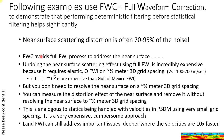FWC is somewhat similar to the FWI process, but it avoids the full FWI process to address the near surface noise. Undoing the near surface scattering effect using full FWI is incredibly expensive because it requires elastic Q-FWI on a half meter grid, 3D grids with incredibly slow velocities. It turns out this is 10 to the 6th more expensive than Gulf of Mexico FWI. But you don't need to resolve the near surface on a half meter grid spacing — you can just measure the distortion effect of the near surface and remove it without resolving it.